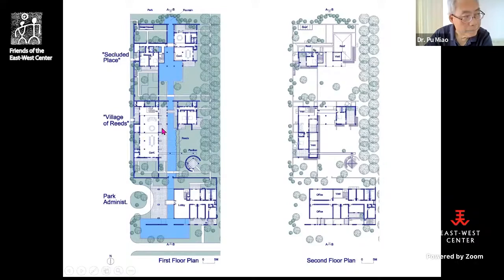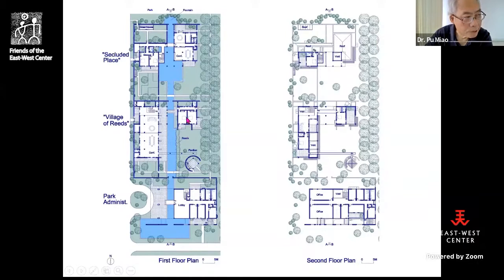Out of each room I designed some outdoor space — for example, a waterfront platform to work with the conference room, and another kind of green space for the private rooms. Even on the second floor you have a roof garden to be used along with the room.